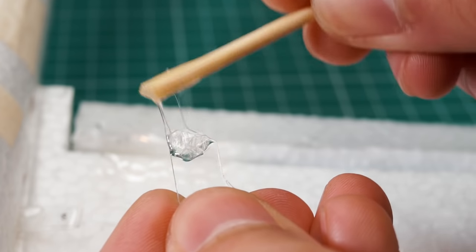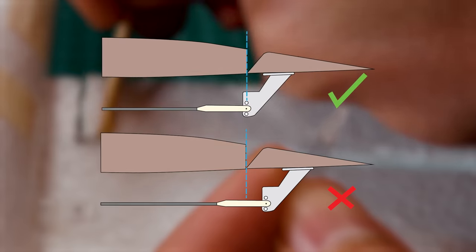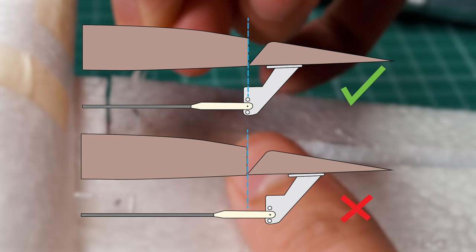It is important to place the control horn in the right position. Here you can see the right and wrong way of putting the control horns according to the pivot point of your aileron.